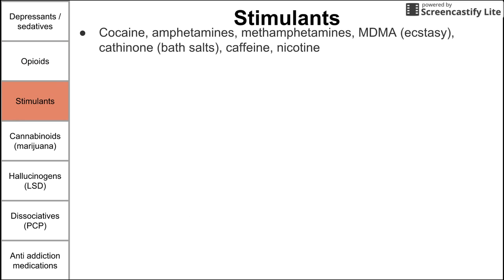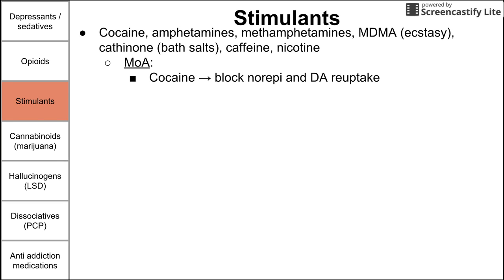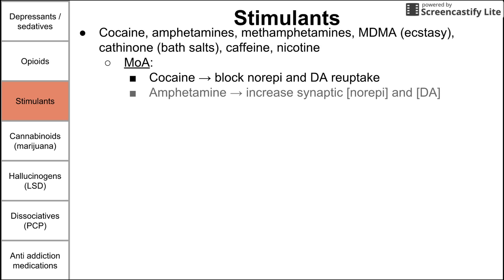Next we have the stimulants. These include cocaine, amphetamines, methamphetamines, MDMA (ecstasy), and cathinone (bath salts), as well as milder ones like caffeine and nicotine. Cocaine blocks norepinephrine and dopamine reuptake, increasing their effectiveness in the synapses. Amphetamine increases the synaptic concentrations of norepinephrine and dopamine, so similar to cocaine.